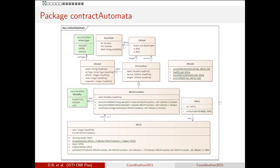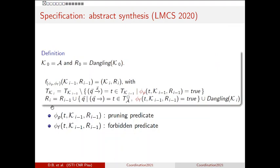This is the class diagram of the package contract automata, which has been automatically generated with Sparx Enterprise Architect starting from the source code. The main class is MSCA — Modal Service Contract Automata — which contains the methods for computing the composition and the various coordinations. States of contract automata are vectors of basic states, labels are partitioned into request or match, and transitions have modalities that can be either permitted, urgent, or lazy.